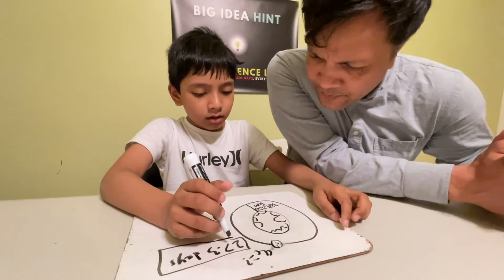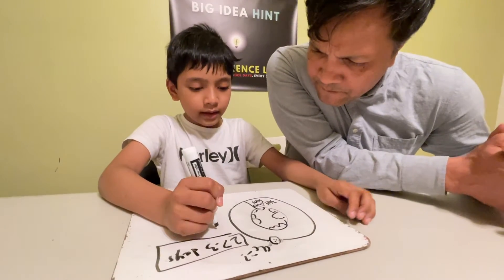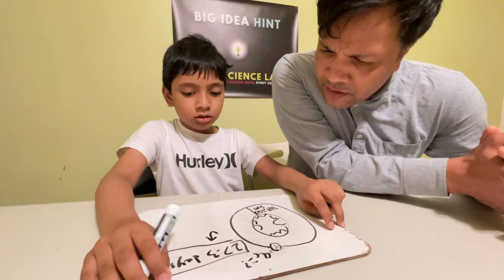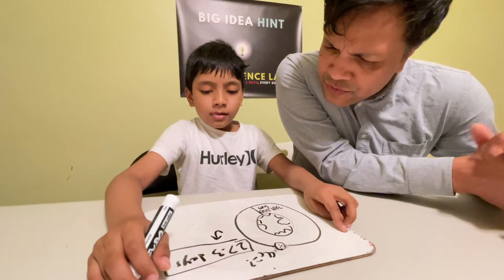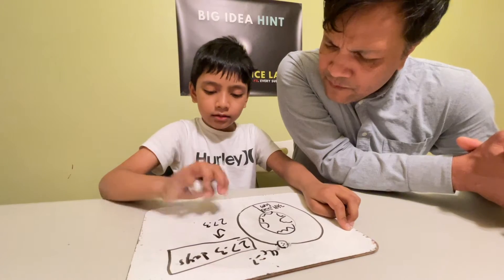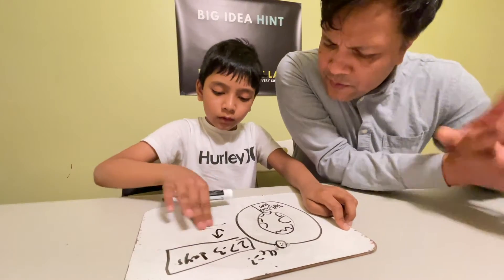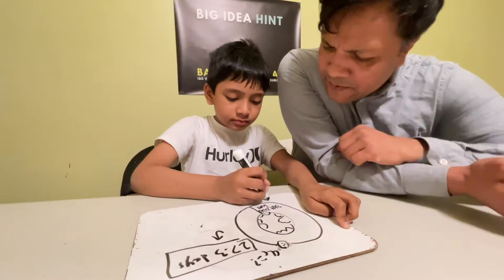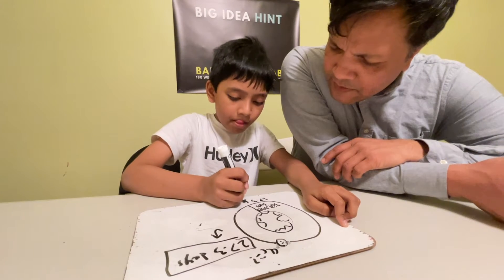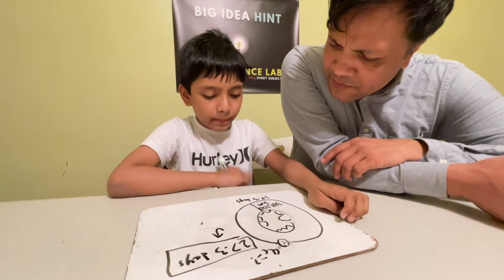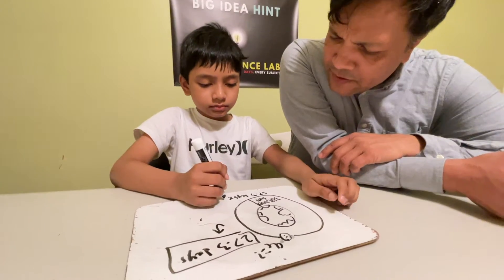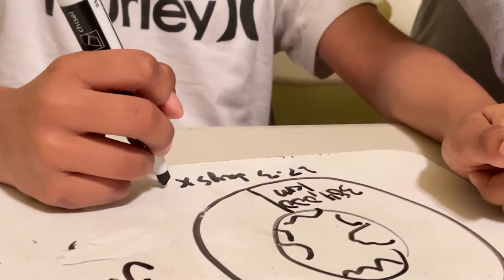A student asks for help converting to SI units. The tutor responds: write 27.3 days, then multiply using unit cancellation — write something on the top and something on the bottom to cancel the days.